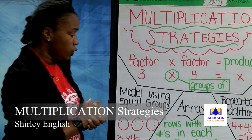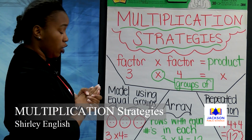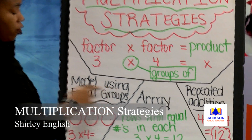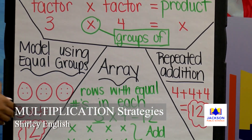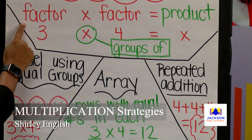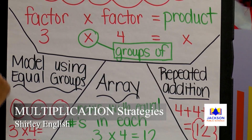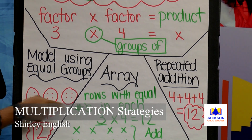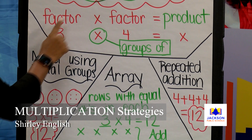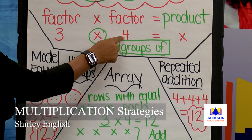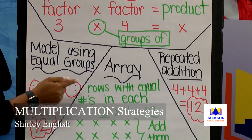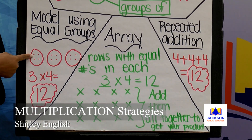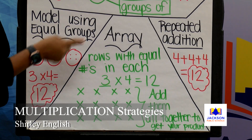The first strategy that we're going to talk about is using equal groups — modeling. I know that a lot of times we love to draw, so we're going to model. Model is the same thing as drawing. Our first factor says three, and this is telling me how many groups. Mrs. English has drawn three circles to show three groups. It's three groups of four, so in each group I have four objects — four objects here, four objects there, and another four objects.